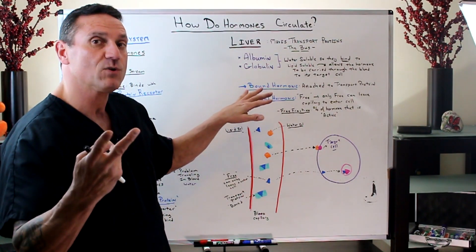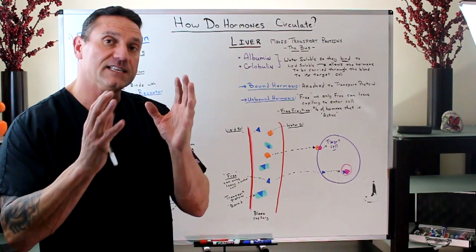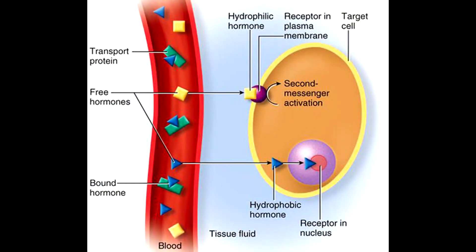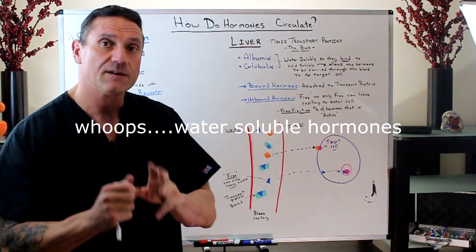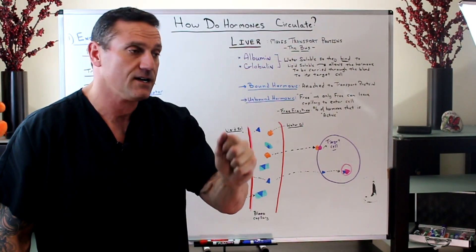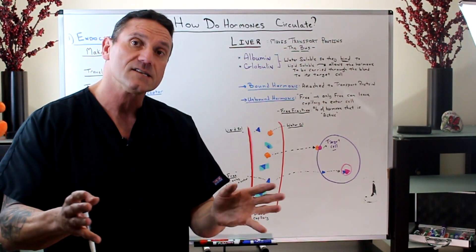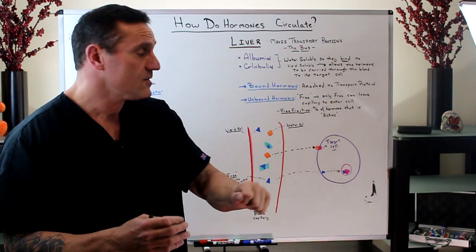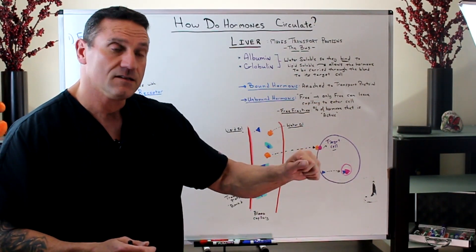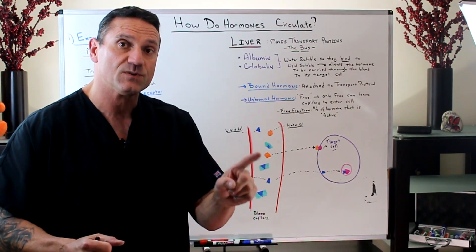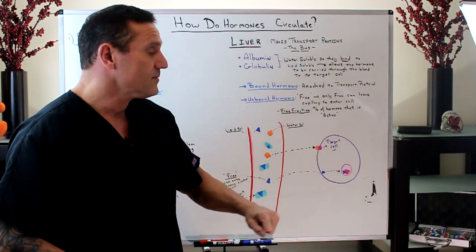There are two tricky words. When a hormone is transported on the bus, it's bound. If it's not being transported on the bus — like the water-soluble hormones — it's unbound, otherwise known as free. So when you're looking at blood labs and you see free thyroid, free estrogens, free testosterone, free insulin — this is the stuff that's free. Only the free ones can actually get off the bus, leave the capillary, and enter the cell. There's a percentage called the free fraction — that is the percentage of the hormone that is biologically active.